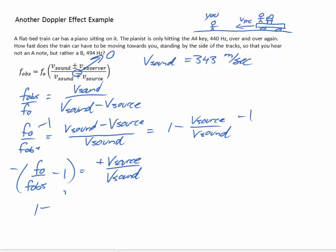We have that negative sign. So what I'm going to do is take the negative of both sides to get rid of that. Negative F0 over F_obs minus 1...